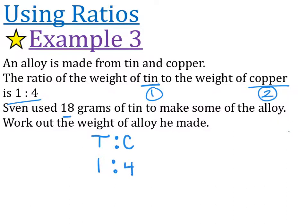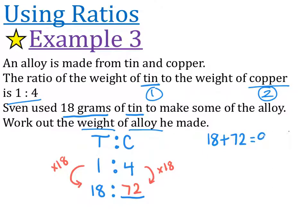Okay, so we've got tin and copper in that particular order, and they're in the ratio 1 to 4. It says Sven used 18 grams of tin. So under the letter T, we write the number 18, and we want to find out how much copper he used. Alright, so what we have to do is find out how do we get from 1 to 18, and that's times by 18. So we do the same thing on the other side, times by 18. That is going to give us 72. So the alloy that Sven made was made with 18 grams of tin and 72 grams of copper. Now, I said at the beginning that alloy is just a combination of more than one metal. Now, the actual question says, work out the weight of the alloy. So all together, how much did it weigh? So if he's got 18 grams of tin and 72 grams of copper, all together, he must have 90 grams.